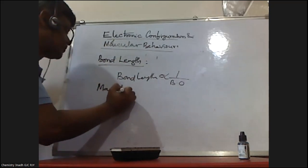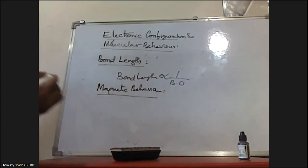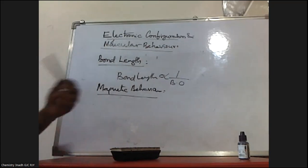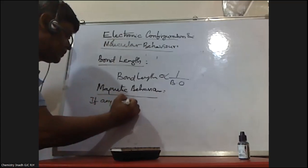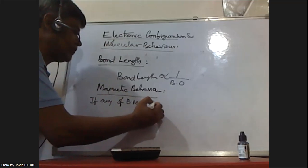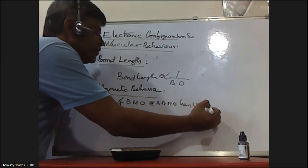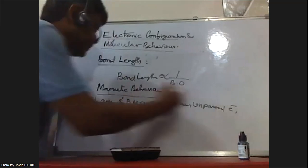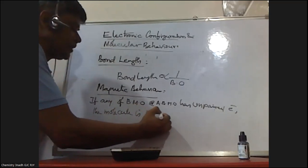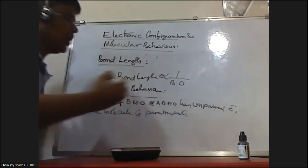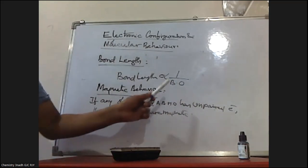Next one is magnetic behavior. Magnetic behavior means whether we can predict whether the substance is diamagnetic or paramagnetic. If any of the bonding molecular orbital or anti-bonding molecular orbital has an unpaired electron, then the molecule is paramagnetic. After writing the electron configuration, if any bonding or anti-bonding molecular orbital has an unpaired electron, the molecule is paramagnetic.